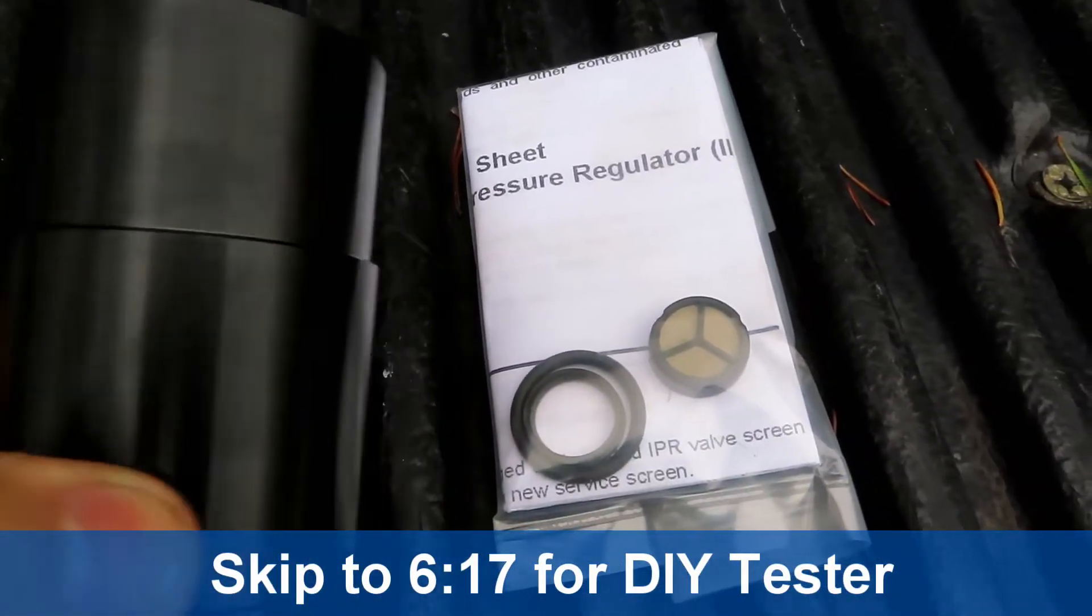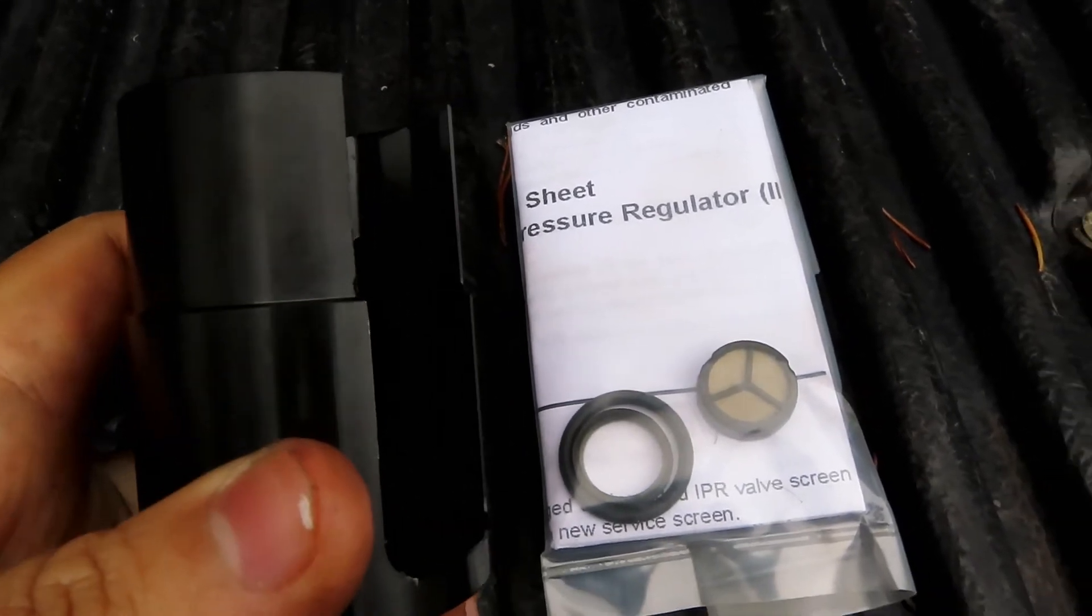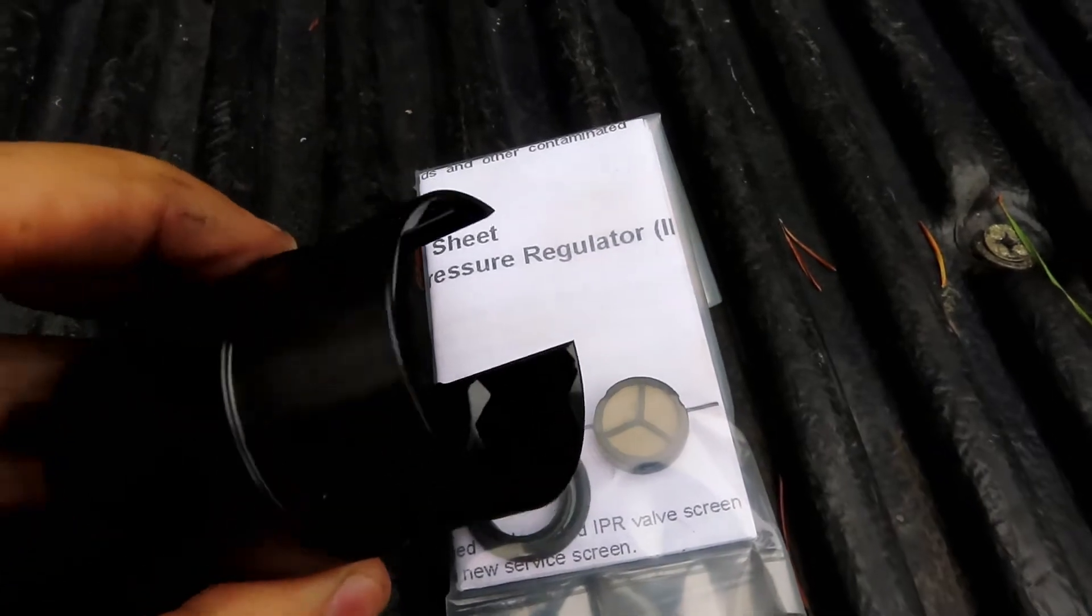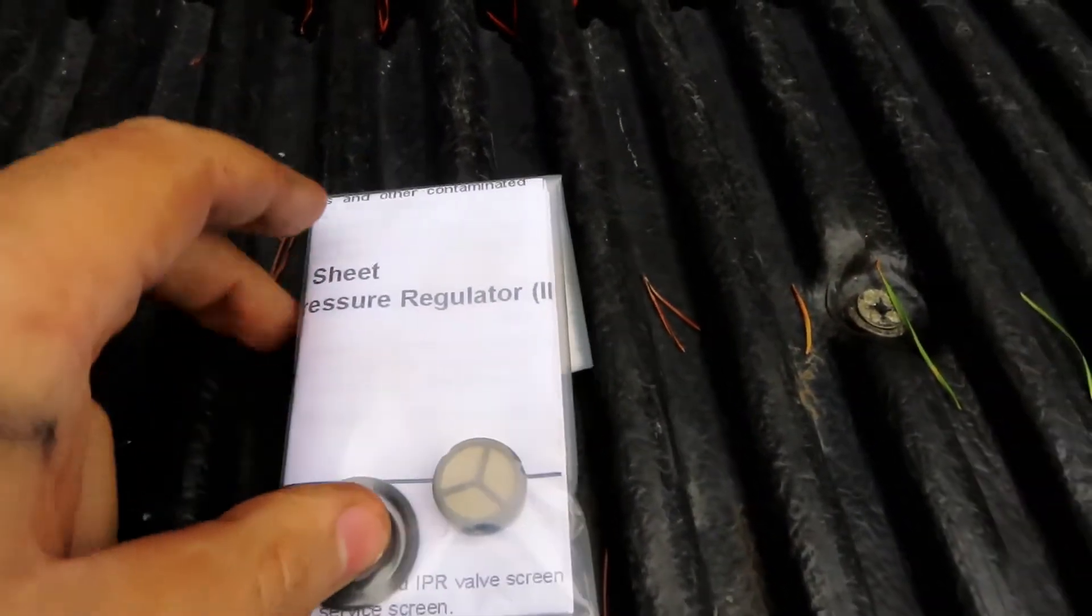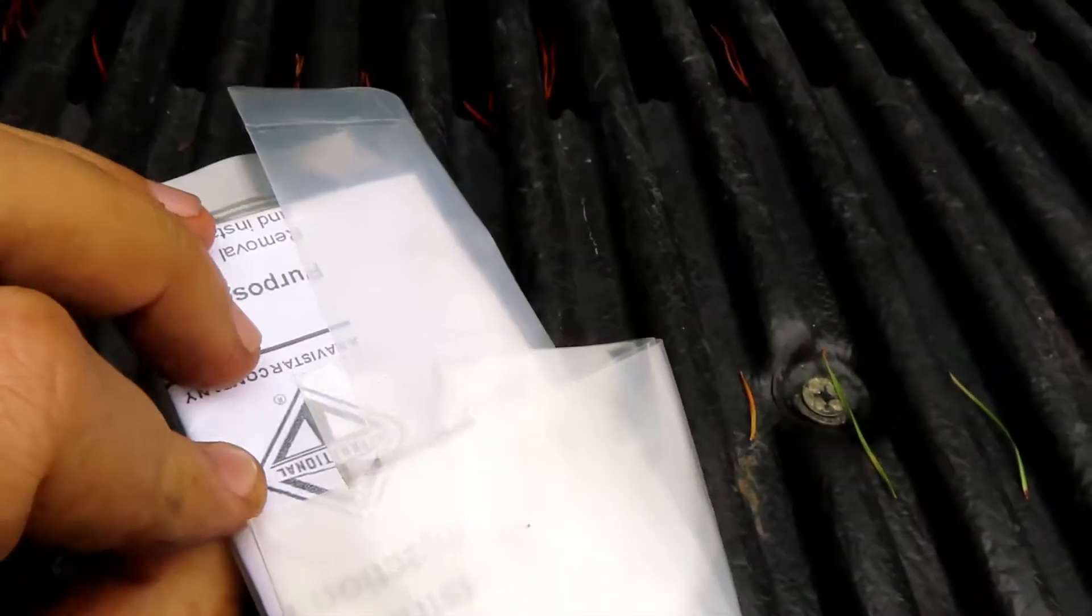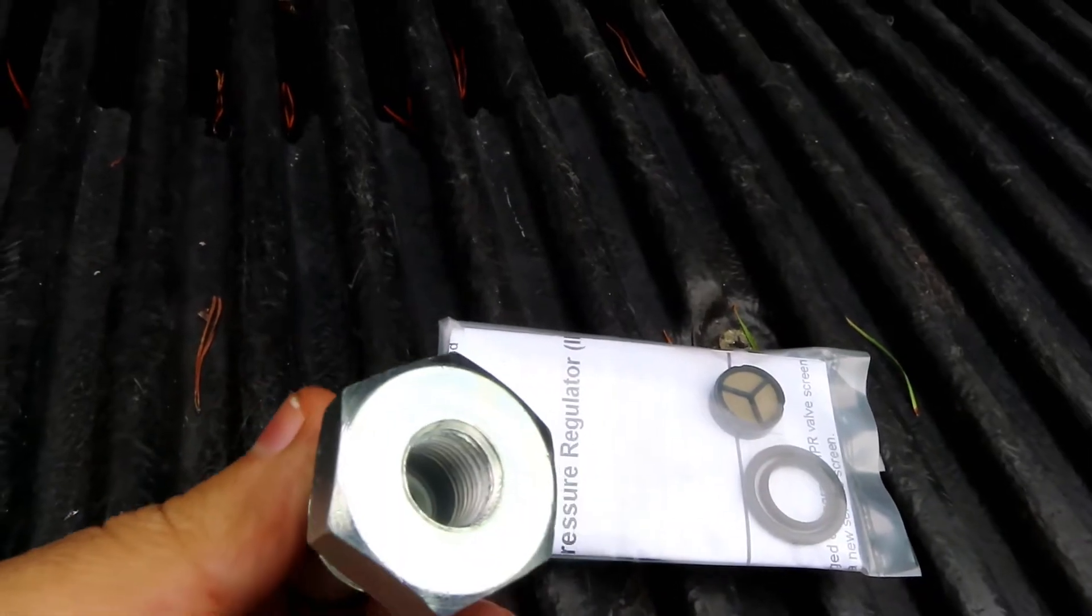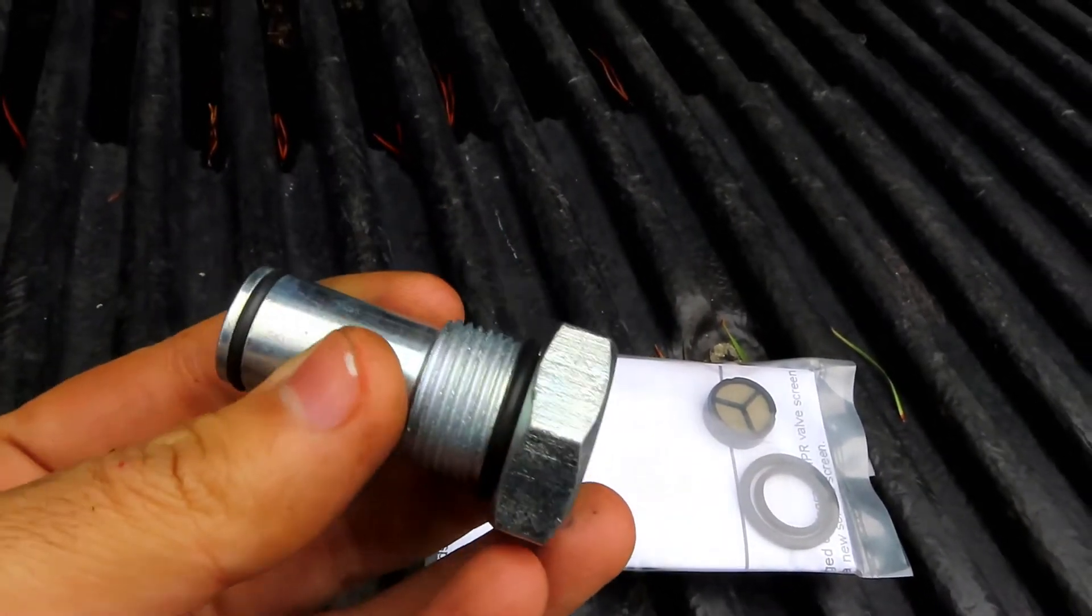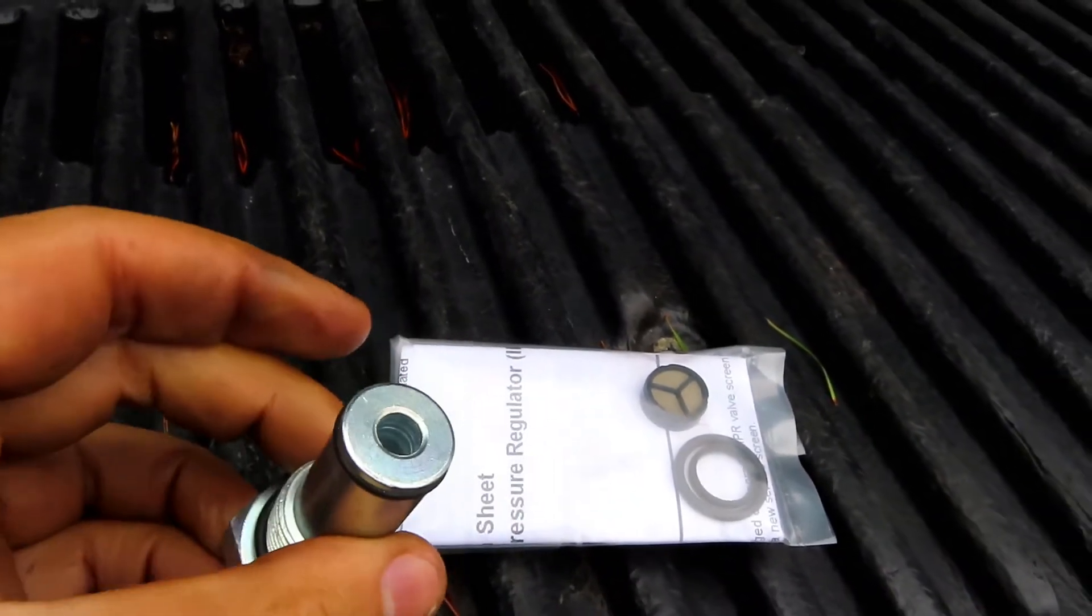Today I'm replacing the IPR screen on my IPR valve on my truck, and this is the socket I'll be using. This is the screen kit, an International part number. I'll also be making a test tool with this fitting here, but I'm not doing a test, I'm just making a tool to show you how to test your high-pressure oil system for leaks.